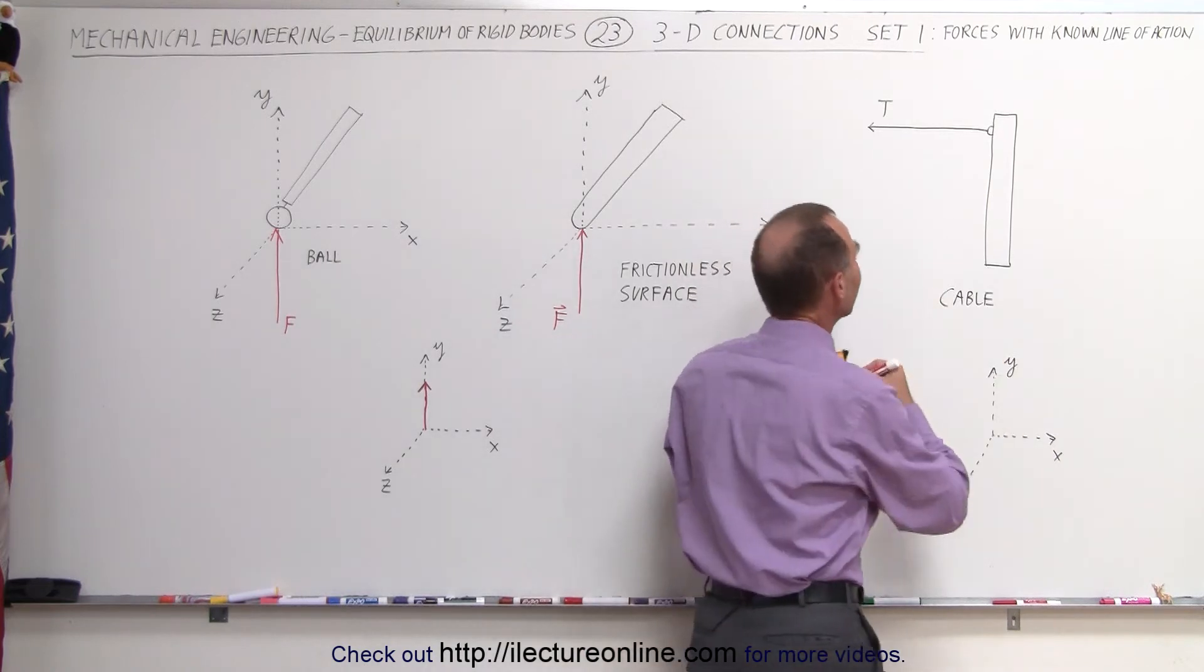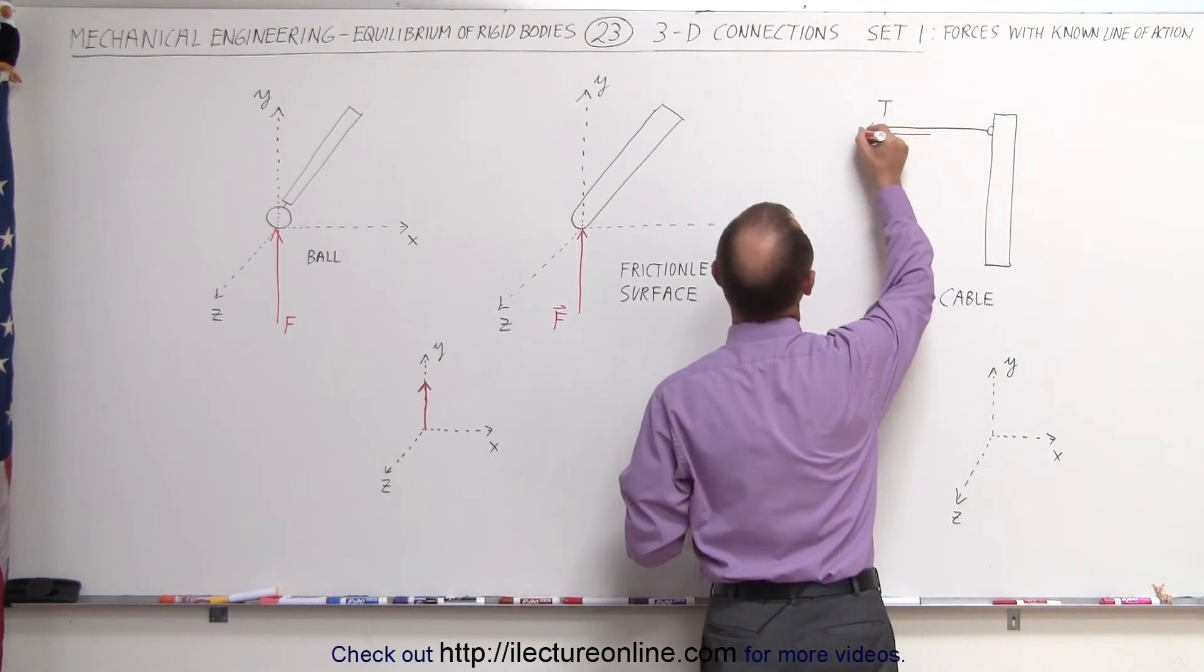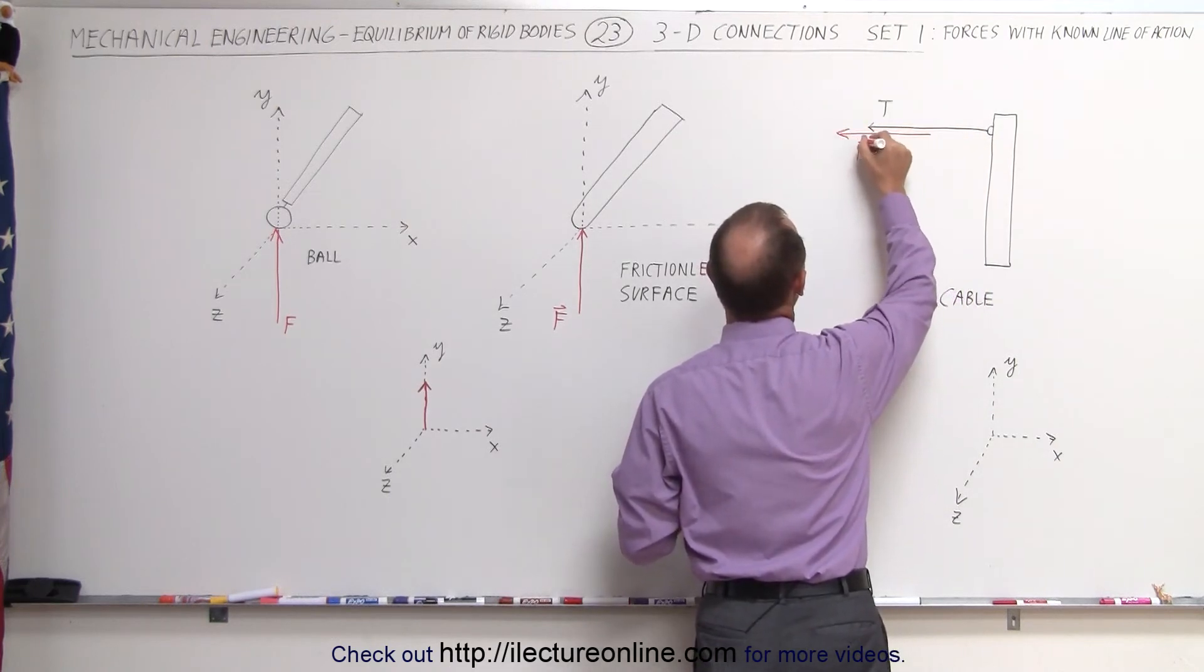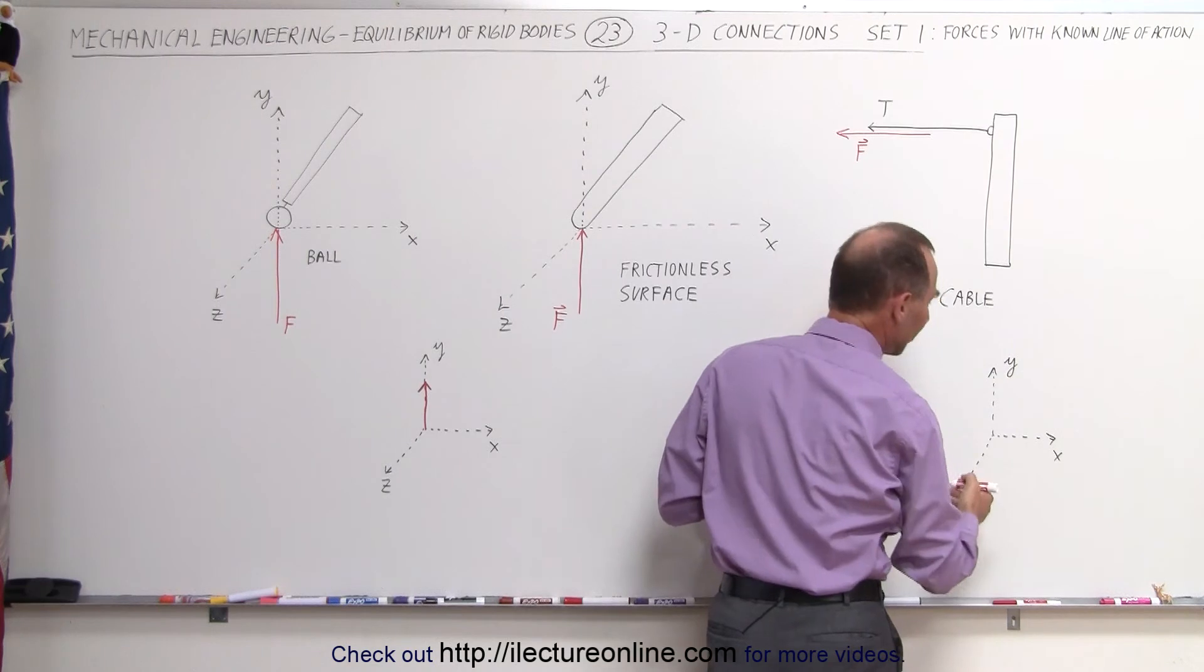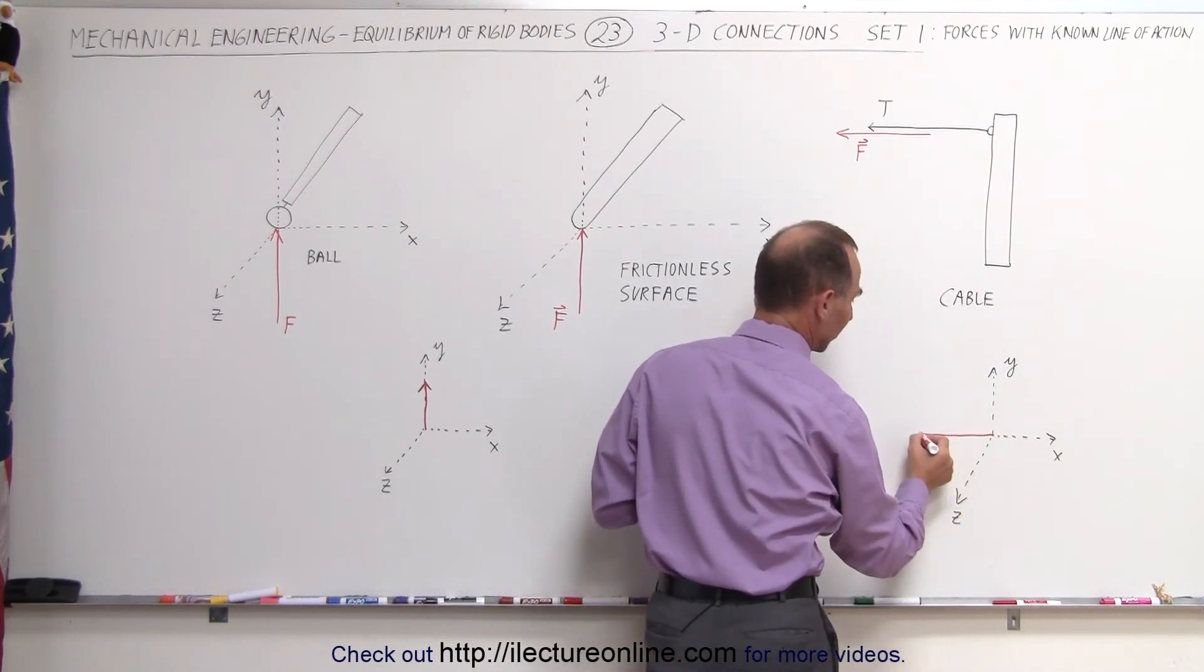Therefore the force acting on this cable is directly outward from the beam, and so the force would be in this direction. In the XYZ coordinate system you can see that would be directly in the negative X direction like that.